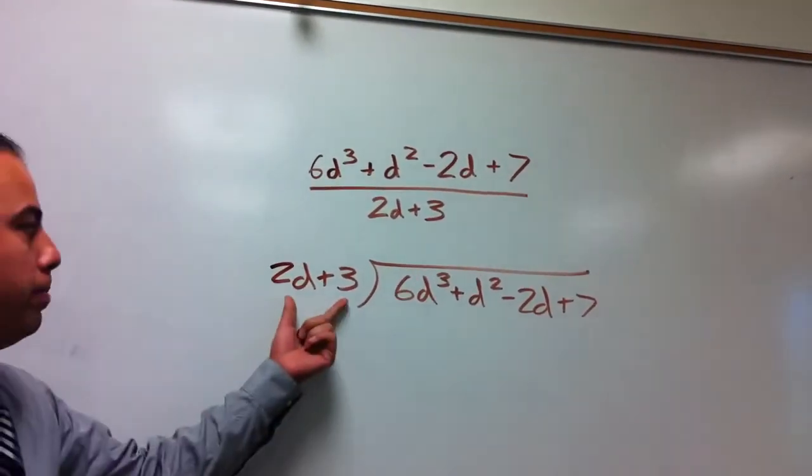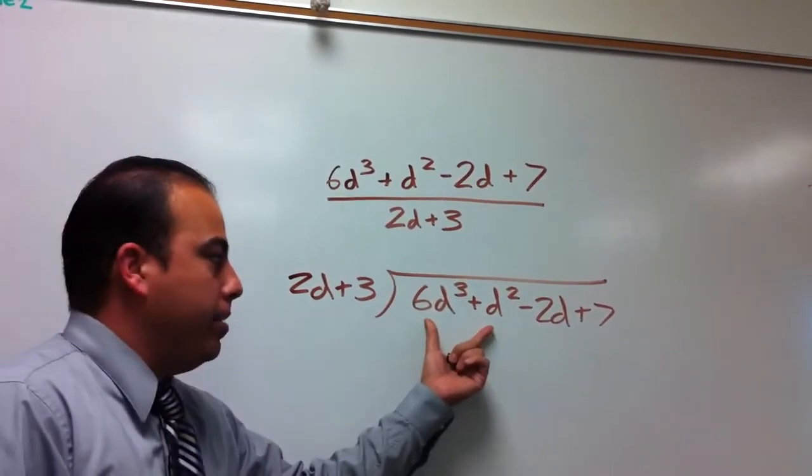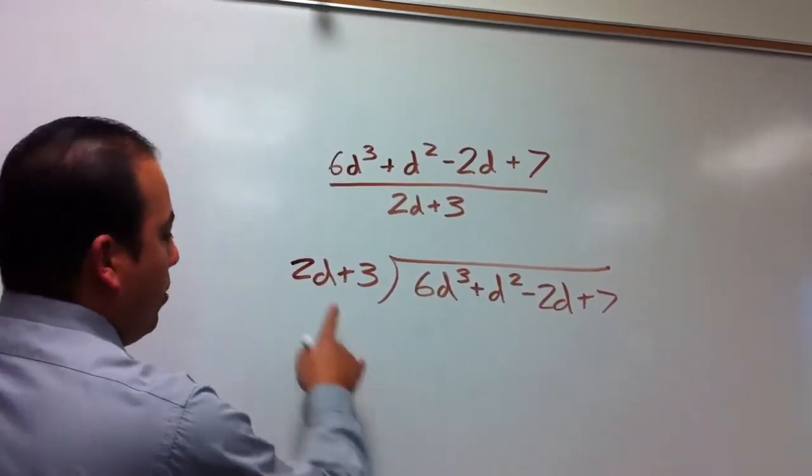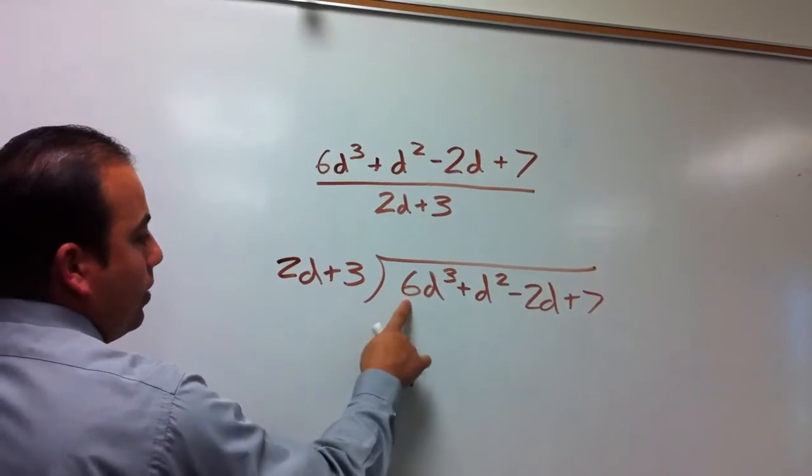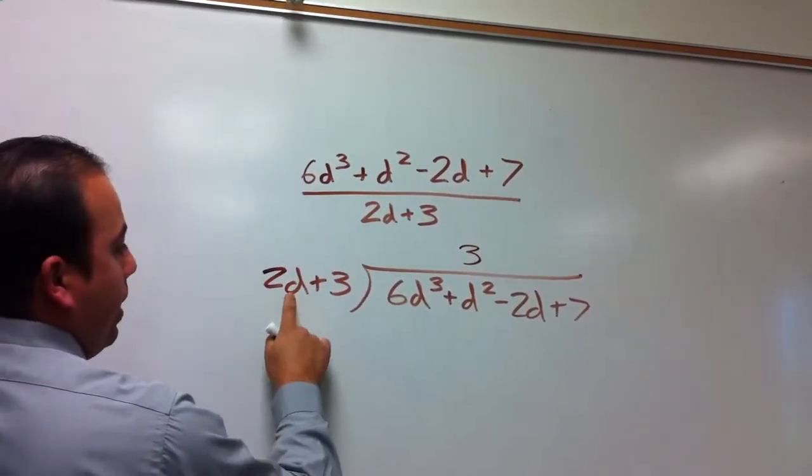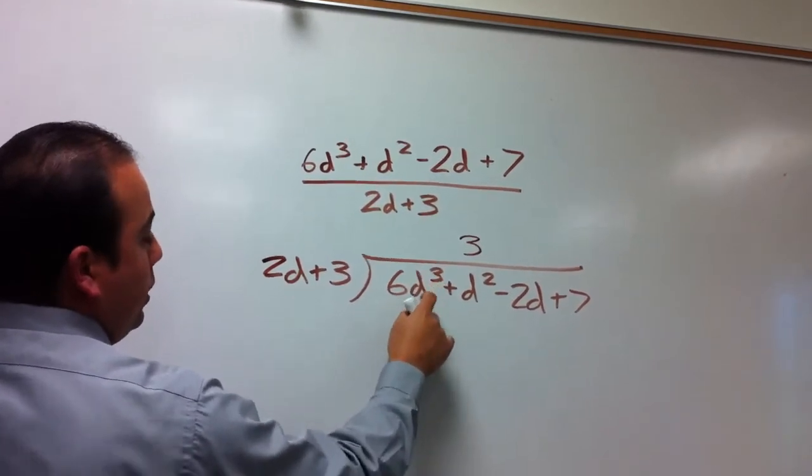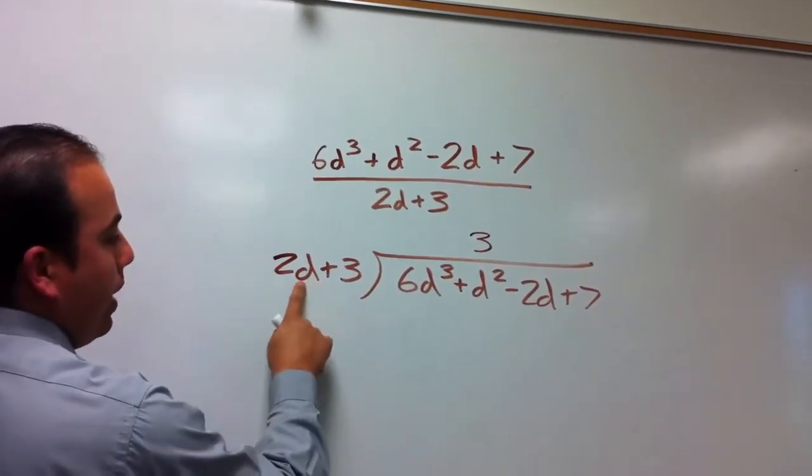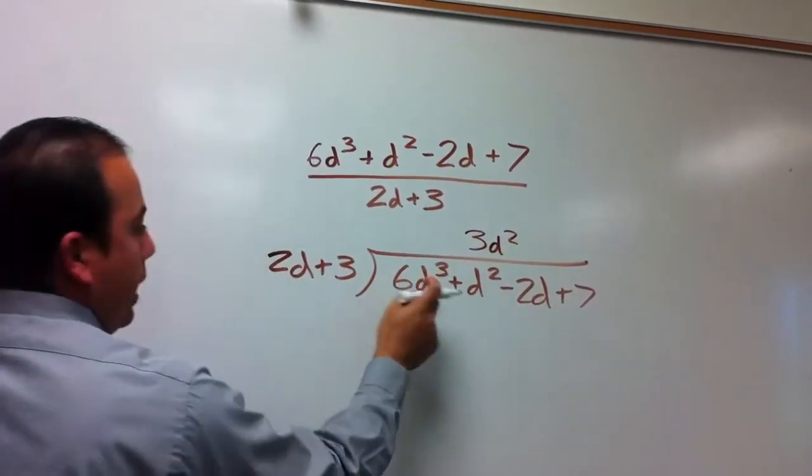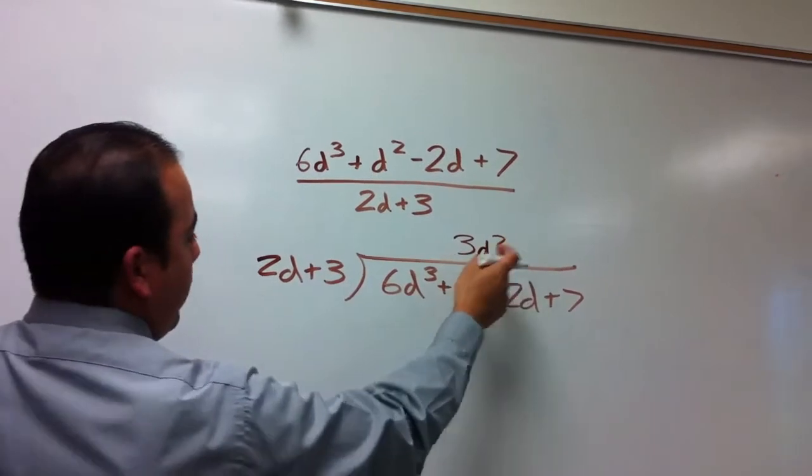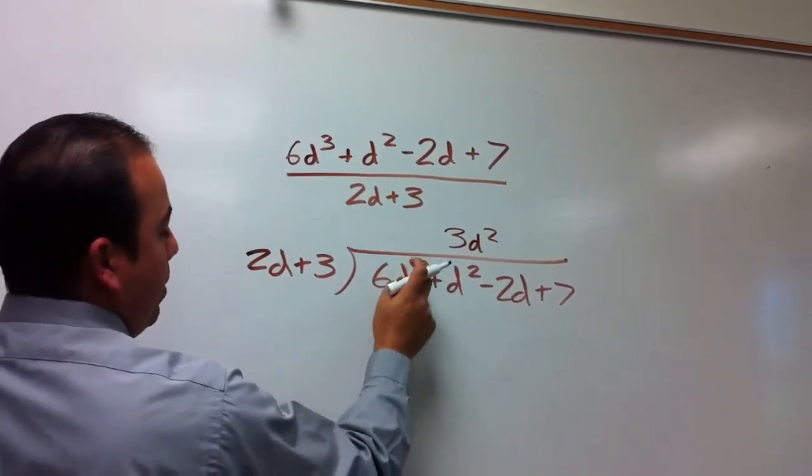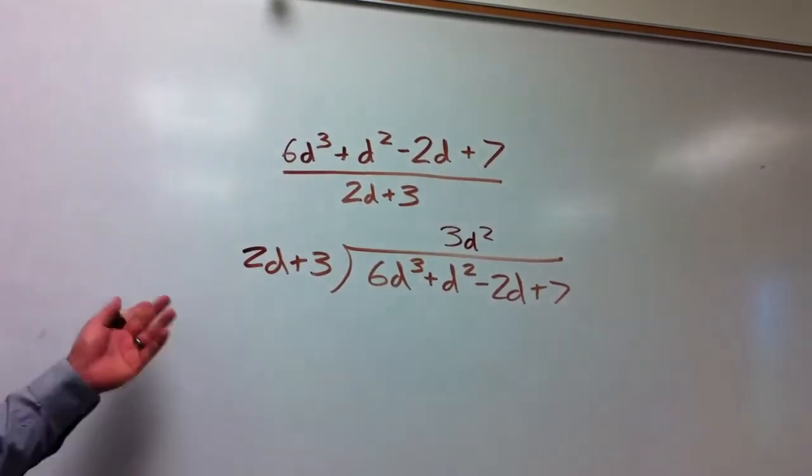Now remember, you have two spaces here, so you need to take up these two spaces. We always want to get rid of this number first. First, we're going to look at how many times 2 goes into 6, and that would be 3. Then we need to determine what power of d we need. We already have d here, so we just need d² to get rid of d³, because d here and d here add together and can be subtracted from d³.